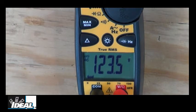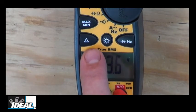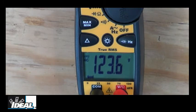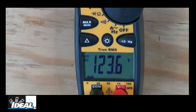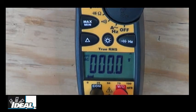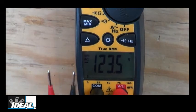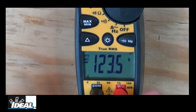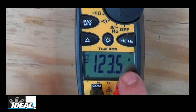Now, another key feature of the tester is the relative button over here. And we can use that to compare two values. So say I want to compare this voltage to another voltage in a building, I can actually hit the relative button. And what it does, it stored that reading. And if I disconnected the test leads from the extension cord over here, it saved that reading.